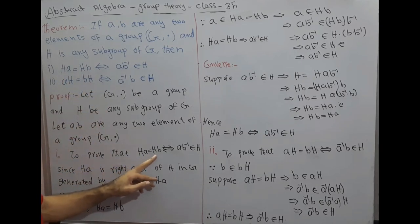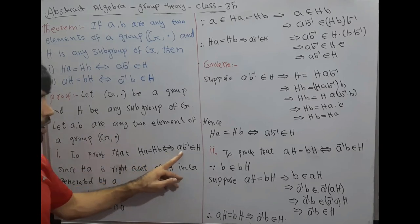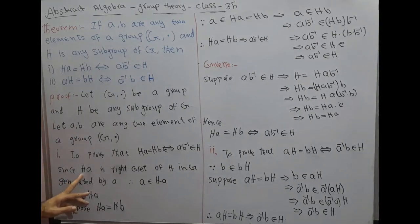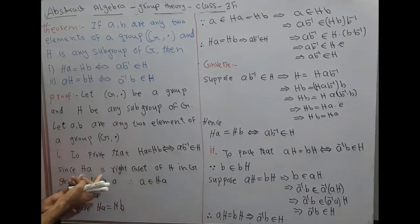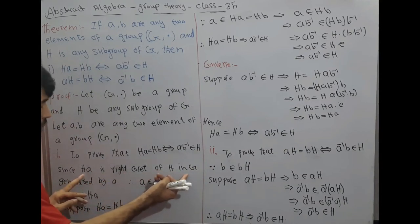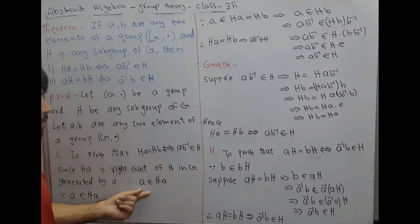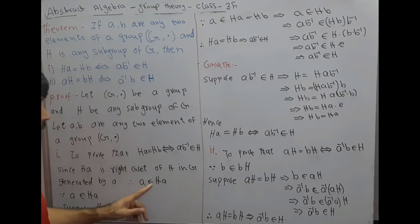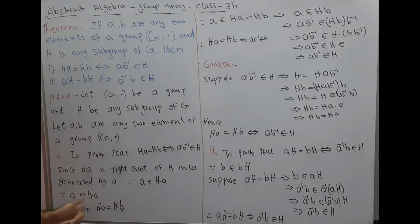To prove: Ha = Hb if and only if a·b⁻¹ belongs to H. Since Ha is the right coset of H in G generated by a, by definition of right coset, a belongs to Ha. Suppose the left side is true, that is Ha = Hb.